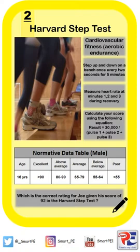As soon as they finish, they must record their heart rate during recovery for three minutes — at minute one, minute two, and minute three. That data must then be put into an equation to work out their score. The equation is 30,000 divided by pulse one plus pulse two plus pulse three. It's really important you notice the brackets — pulse one plus pulse two plus pulse three must be added first, and then 30,000 is divided by that total. All those pulses are the heart rate achieved at minute one, minute two, and minute three during recovery.